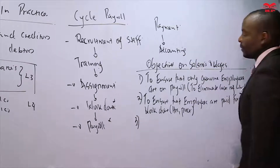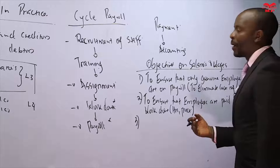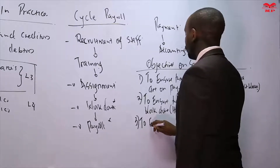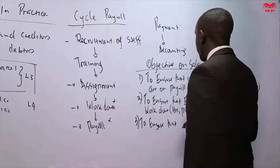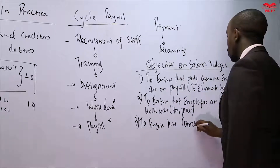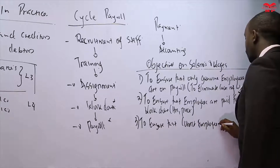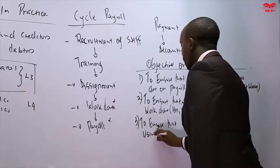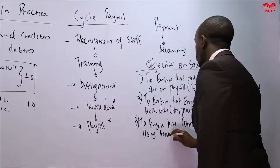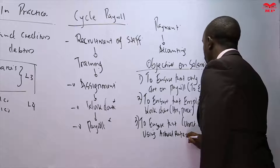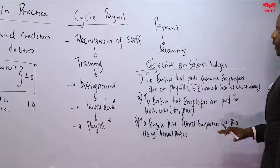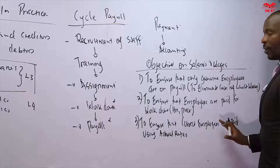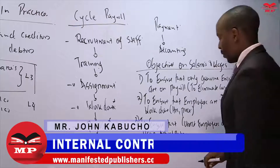A third objective is to ensure that correct employees are paid at correct rates. For example, if your rate is 500 per hour, you should receive exactly that, proportioned to the hours worked. The rate paid to you must be the rate that is meant for you.